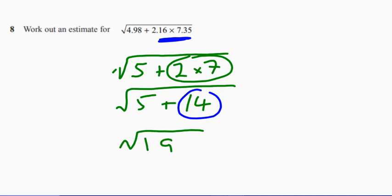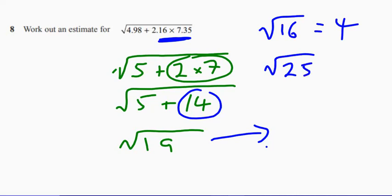But actually, in the scheme of things, it doesn't really matter. Because what would be a good guess here? Well, we know that the square root of 16 is equal to 4. We know the square root of 25 is equal to 5. So as long as you give an answer somewhere between 4 and 4.5, you should be okay.